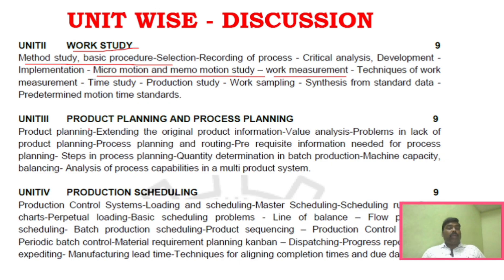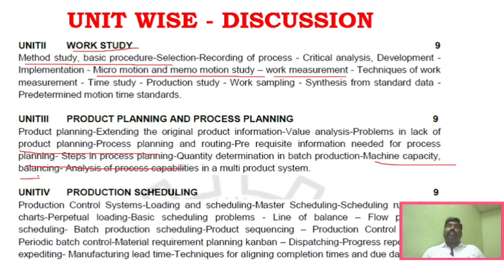Unit 3 covers product planning and process planning — this is a very important area. Machine capacity and machine balancing are also key areas within Unit 3.